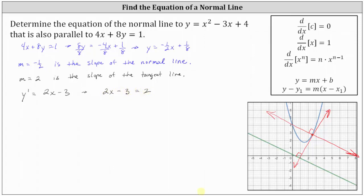We add 3 to both sides, which gives us 2x equals 5, then divide both sides by 2. Simplifying, we have x equals 5 halves. So the point of tangency — which is also a point on the normal line we're looking for — has an x-coordinate of 5 halves.